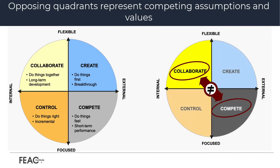What is noticeable about these four quadrants is that they represent opposite or competing assumptions. Each dimension highlights a core value that is opposite from the value at the other end of the continuum, such as flexibility vs. stability, or internal vs. external. These competing values in each quadrant give rise to the name of the model: the Competing Values Framework.